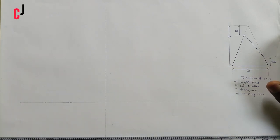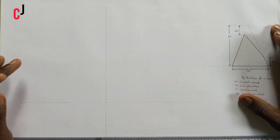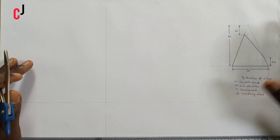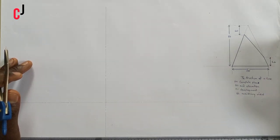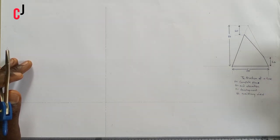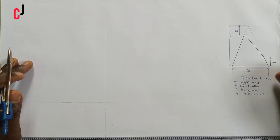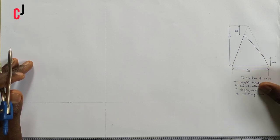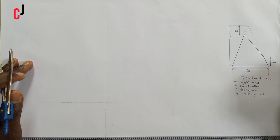Welcome to JC Engineering Drawing. By my right over here we have the first frustum of a cone, and here is the image. We are asked to draw our complete plan, our end elevation, the development, and then the auxiliary view.